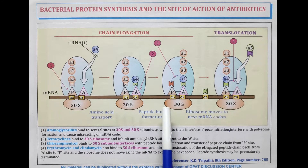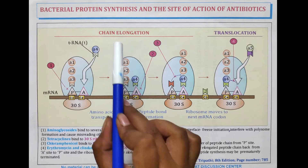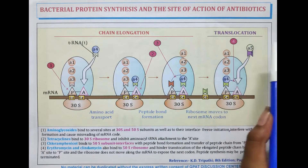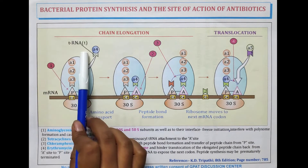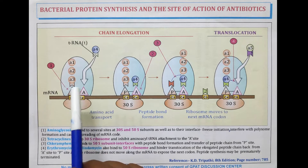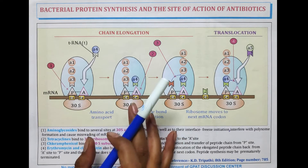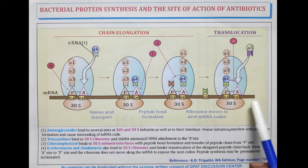Protein synthesis happens by three steps. The first one is initiation, after initiation chain elongation happens, and after chain elongation the third process is translocation or termination. In initiation, the assembly of a ribosome on an mRNA molecule is generated. In elongation, the repetitive cycles of amino acids are added, and in termination or translocation, the release of the protein chain happens.